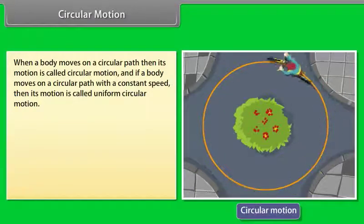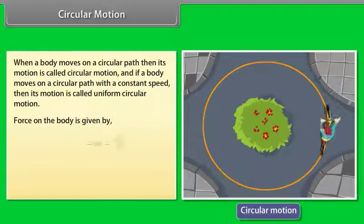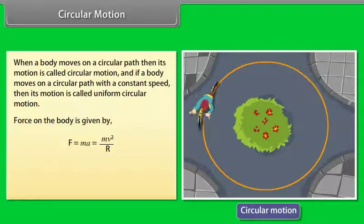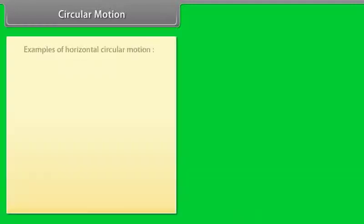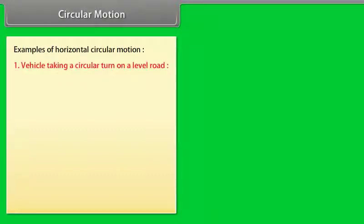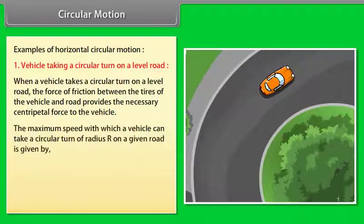Circular Motion: When a body moves on a circular path, its motion is called circular motion. If it moves with constant speed, it is called uniform circular motion. The force on the body is F = MA = MV²/R, always directed towards the center, known as centripetal force. For a vehicle taking a circular turn on a level road, friction between tires and road provides the centripetal force. The maximum speed is given by V = √(μRg).